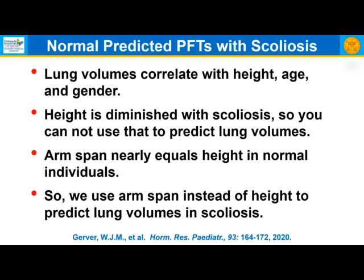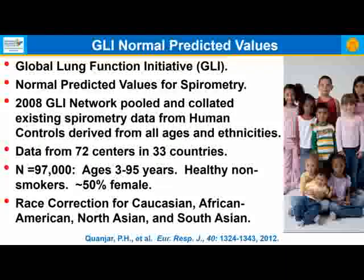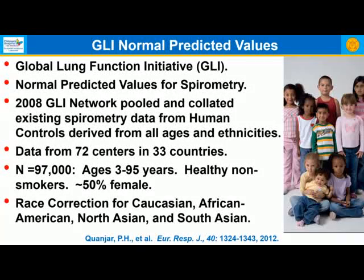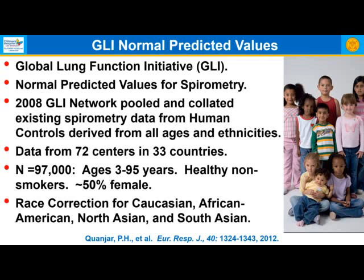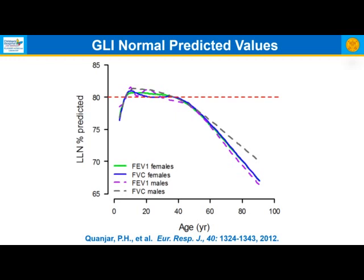Most laboratories, including ours, now use the Global Lung Health Lung Function Initiative (GLI) for predicted normal values. In 2008, this network pooled spirometry data from healthy controls of all ages and ethnicities — data from 72 centers in 33 countries, 97,000 individuals aged 3 to 95, all healthy non-smokers, about 50% female. Race corrections for Caucasian, African American, Northern Asian, and Southern Asian were also included.